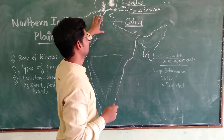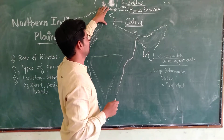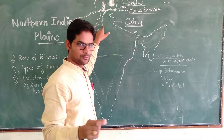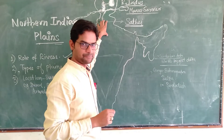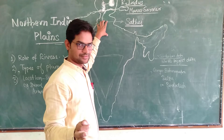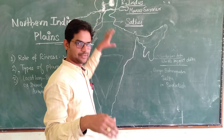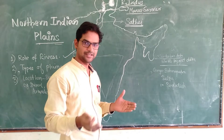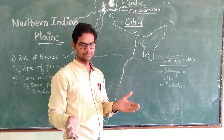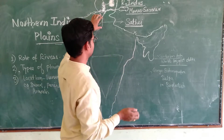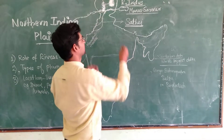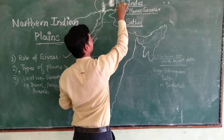In this region, the river Sutlej plays an important role in the formation process of the Northern Indian Plains. Afterwards, we will understand the types of Northern Indian Plains, but first we will understand the role of rivers. Here we discuss about River Indus.